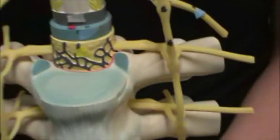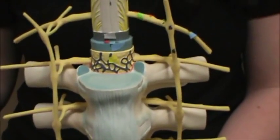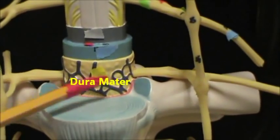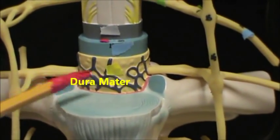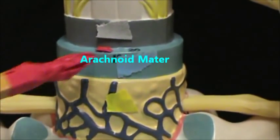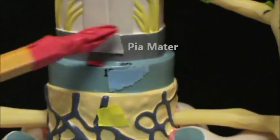And then we're going to come down here and identify the meninges. In yellow we have the dura mater. In blue we have the arachnoid mater. In gray we have the pia mater.